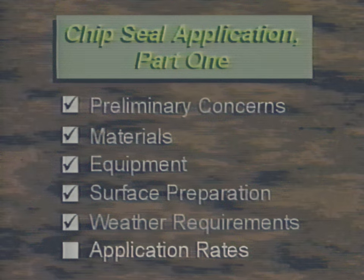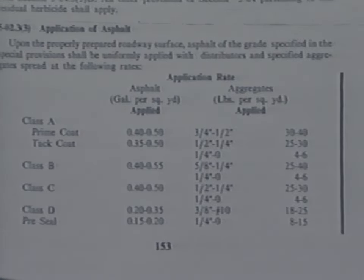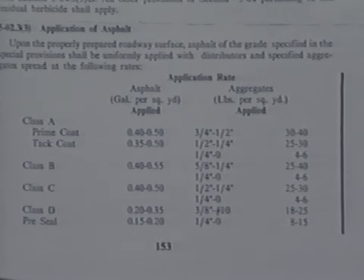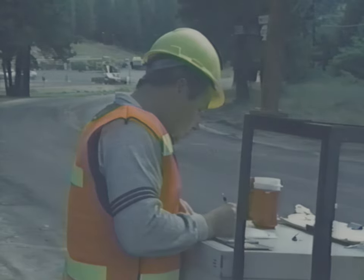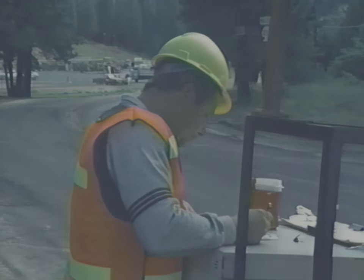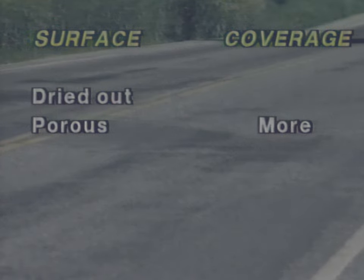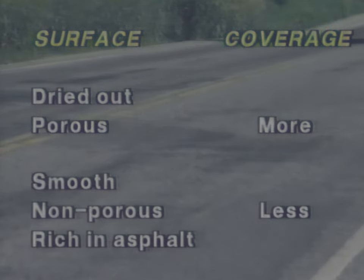Finally, you'll have to determine the application rates for the oil and chips. Many agencies use a table that lists the rates for both the liquid asphalt and the aggregate. A range is given for each rate, allowing you to increase or decrease the coverage depending on the condition of the surface and the road's average daily traffic. The general rules are: for dried out and porous surfaces, more oil should be applied; for surfaces that are smooth, non-porous, and rich in asphalt, less oil should be applied.